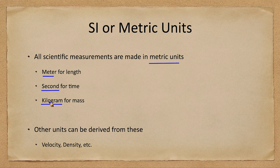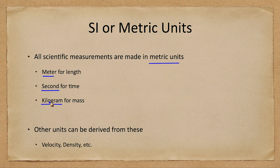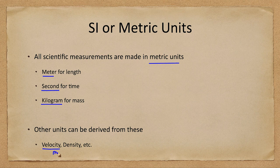Often when you hear me say something, I may give you a conversion into miles or feet or pounds, because those are the numbers that students in the United States are most familiar with. However, the standard measurements in science are all going to be in meters, seconds, and kilograms, or their different variations. Sometimes you'll see things measured in centimeters, millimeters, or just grams for smaller amounts of mass. All other units that we use will come from these.